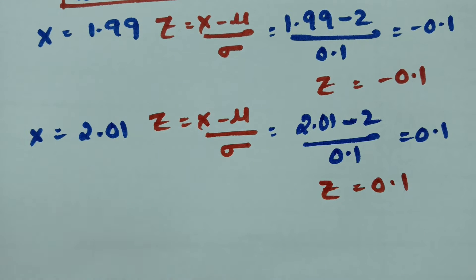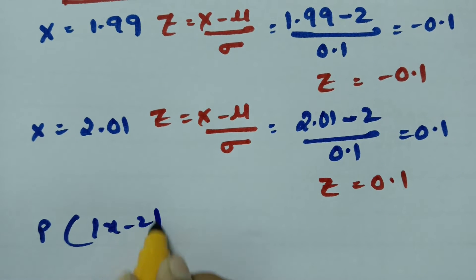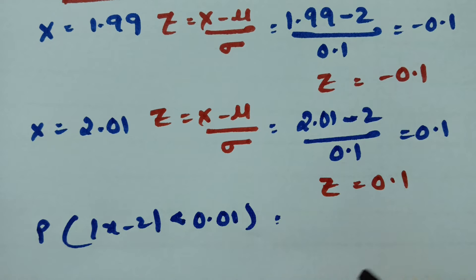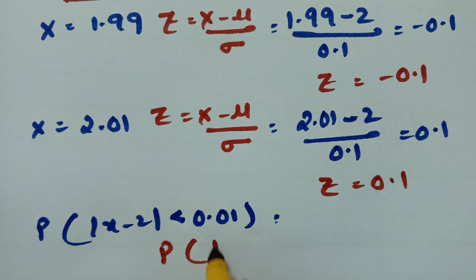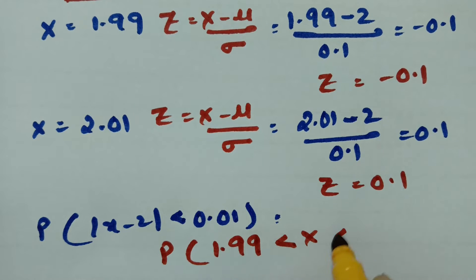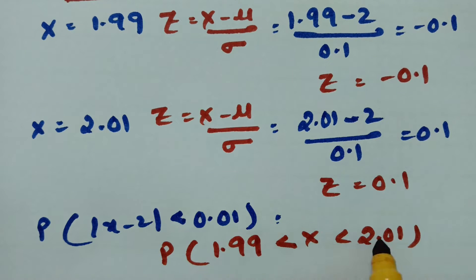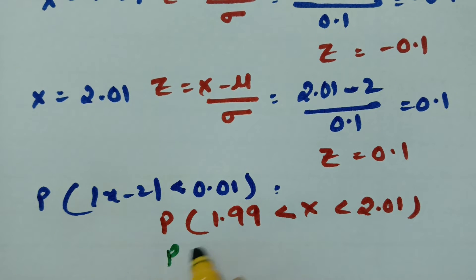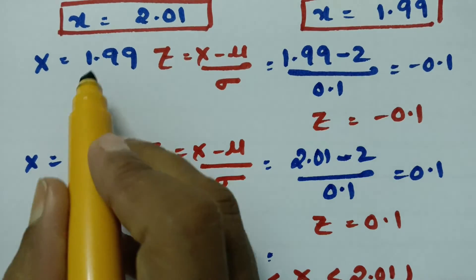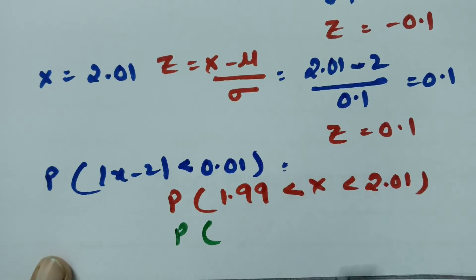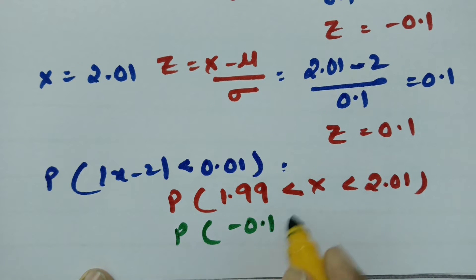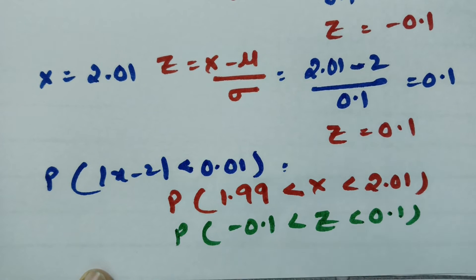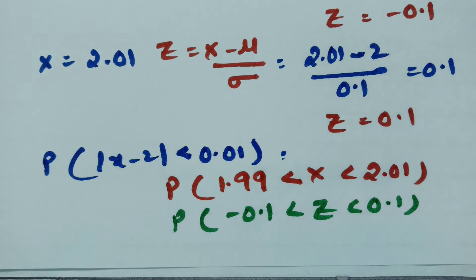Now, the probability of modulus of x minus 2 less than 0.01 can be written as the probability that x lies between 1.99 and 2.01. In terms of z, this is the probability that minus 0.1 is less than z less than 0.1.